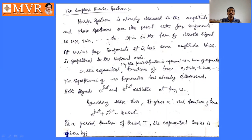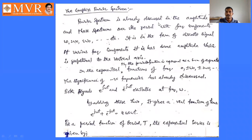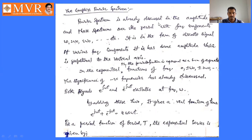Good morning. In the last classes we discussed about the conditions and properties of Fourier transforms. Now we are going to discuss about the complex Fourier spectrum. The Fourier spectrum is a combination of a frequency spectrum and a phase spectrum. The frequency spectrum is the plot between frequency and amplitude or voltage; similarly, the phase spectrum is the plot between phase and frequency.